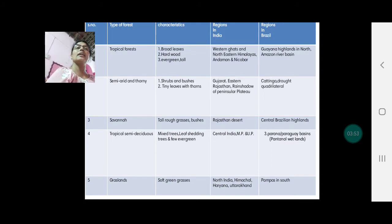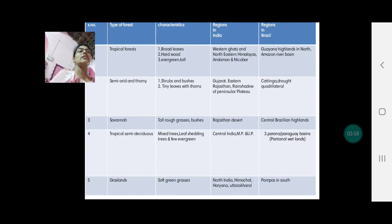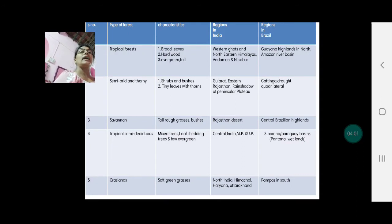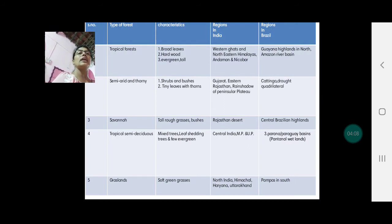Semi-arid and tawny forests in India are found in Gujarat, eastern Rajasthan, and the rain shadow area of the peninsular region. In Brazil, they are found in the Katinga and the drought quadrilateral. Savanna grasslands in India are found in the Rajasthan deserts, while in Brazil they are found in the central Brazilian highlands.